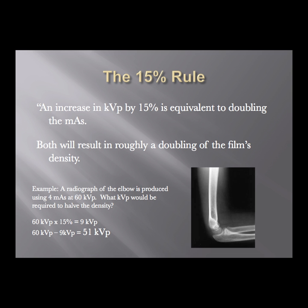Take a look at the example at the bottom. Given a radiograph of an elbow performed at 4 mAs and 60 KVP, what KVP would be required to half the density — to make the film twice as light? Calculate 15% of 60: take 10% of 60, which is 6, then half of that is 3, so 6 plus 3 equals 9 KVP. You need to reduce your KVP by 9, making your new KVP 51.